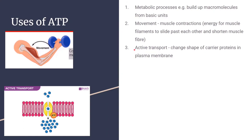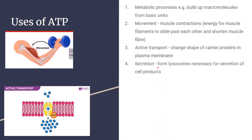ATP is used in active transport — the movement of substances from an area of low to high concentration, against the concentration gradient. ATP is used in changing the shape of carrier molecules in the plasma membrane to allow movement against that gradient. It is also used in secretion, forming lysosomes necessary for secreting cell products — lysosomes transport secretory products to the cell membrane, fuse with it, and allow the products to be secreted out of the cell.